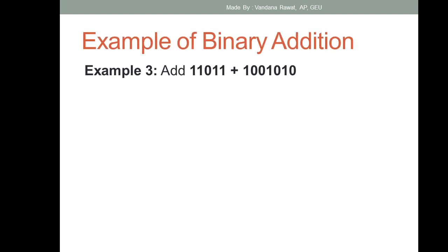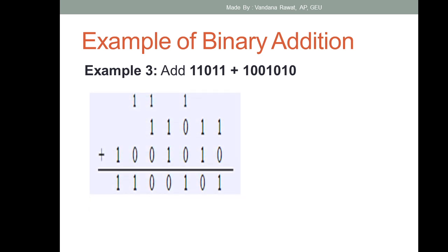Example number three: add the two binary numbers 11011 plus 10010010. Adding from the right: one plus zero is one, one plus zero is zero with carry one, then one plus one is zero with carry, then one, then one plus one is zero with carry, then one from the carry, and the leading one remains. The final answer is 1100101.